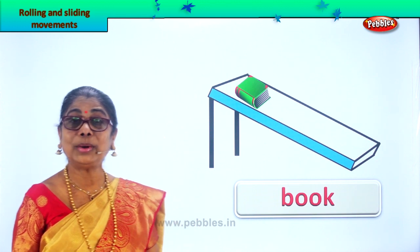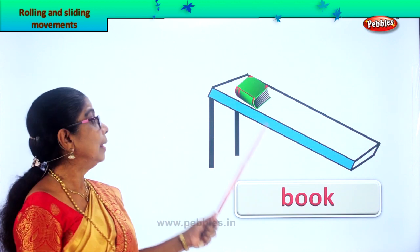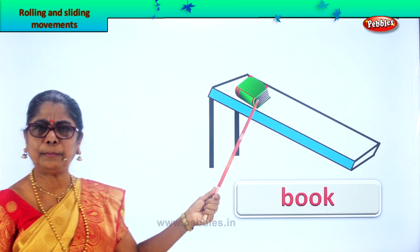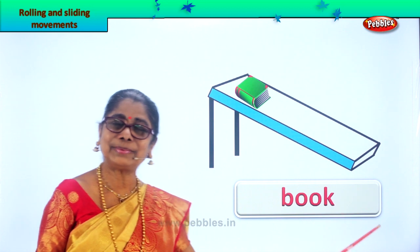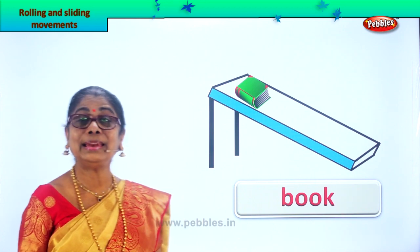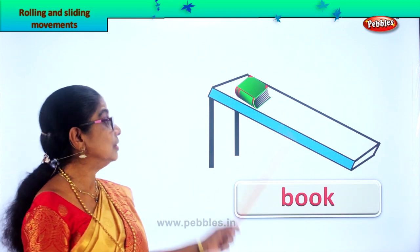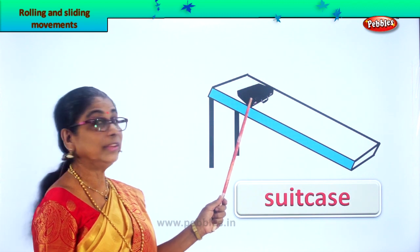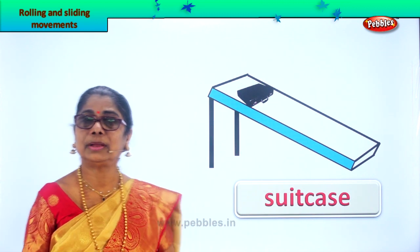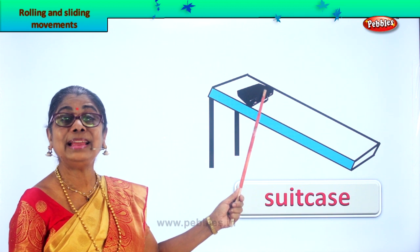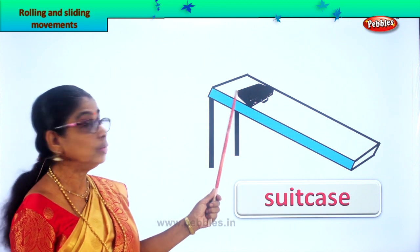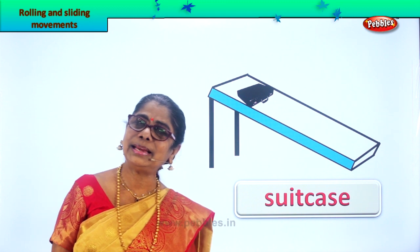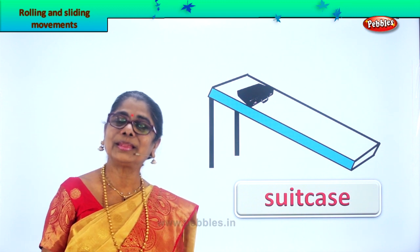Next, what else can slide? You have a book — any book, fat book, thin book, big book, small book — it just keeps sliding down. A book can slide. Next, we have a suitcase. Can the suitcase slide? Yes. This is a suitcase — it also can come sliding down.